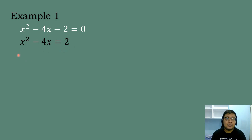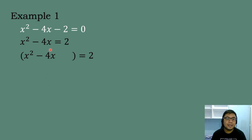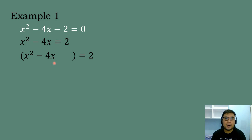We will place an open parenthesis followed by x squared minus 4x, then leave a blank here, equals 2. The next step is to look at the numerical coefficient of the linear term. The linear term is negative 4x, so the numerical coefficient is negative 4. We divide negative 4 by 2 to get negative 2, then square it: negative 2 squared equals positive 4.